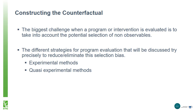The biggest challenge we face when trying to estimate impact is the need to take into account the unobservable factors to avoid under- or overestimating the impact of a program. To control for or reduce selection bias, we use a number of different methods, including both experimental and quasi-experimental methods, which we will discuss in the next units.